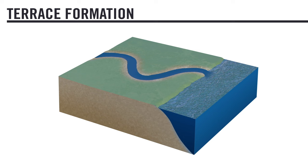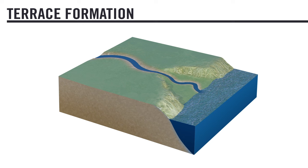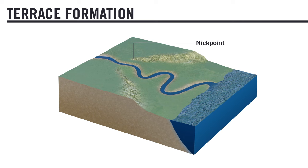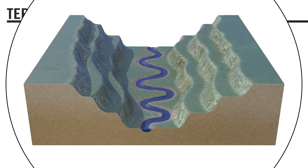When base level changes, this affects the behavior of rivers. If base level drops, such as during an ice age, rivers that were once close to base level elevation will now begin to downcut. A nick point, and sometimes a waterfall, forms where the river drops to its new elevation. These nick points migrate inland over time, as the river continues to downcut and abandon its old floodplains.